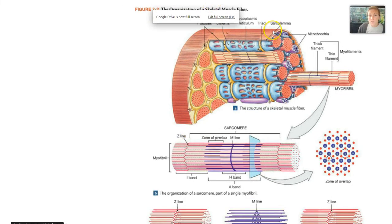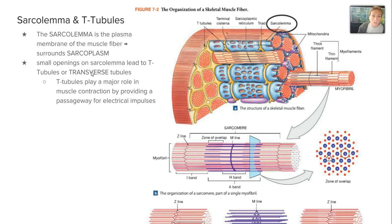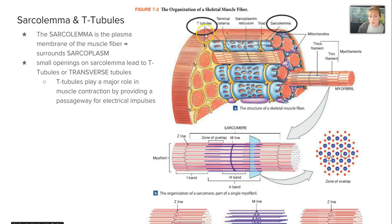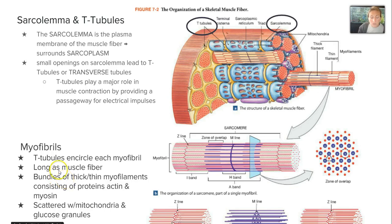Focusing on the organization of a single skeletal muscle fiber, each one has many myofibrils, and we'll break those myofibrils down further. The sarcolemma is the plasma membrane — or cell membrane — of the muscle fiber, and it surrounds the sarcoplasm. Small openings on the sarcolemma lead to T-tubules, almost like pores. T-tubules, also called transverse tubules, play a role in muscle contraction by providing a passageway for electrical impulses, and they encircle each myofibril.